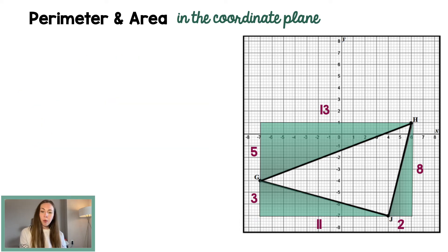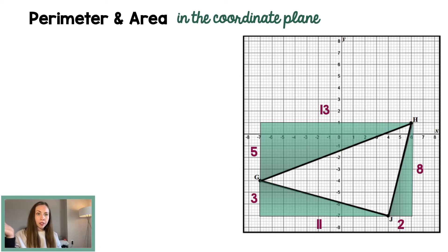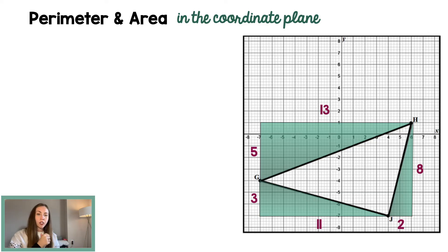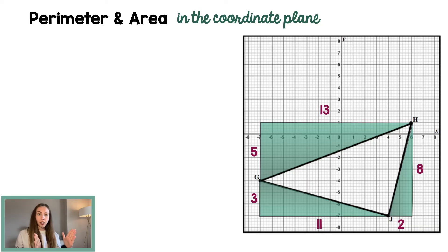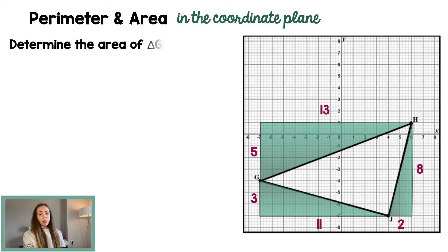Speaking of area, we do also want to find the area of this figure. Finding the area here is not as simple as last time because we don't have a horizontal and vertical base and height. So we're going to take the second approach — some people call it the box method — where you build a rectangle on the outside of your triangle, then subtract the corner triangles.